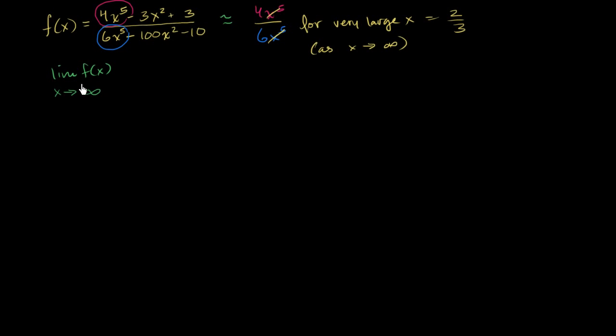So the limit of f of x, as x approaches infinity, as x gets larger and larger, all of these other terms aren't going to matter that much, and so it's going to approach 2 thirds. Now let's look at the graph and see if that actually makes sense. What we're actually saying is that we have a horizontal asymptote at y equals 2 thirds.